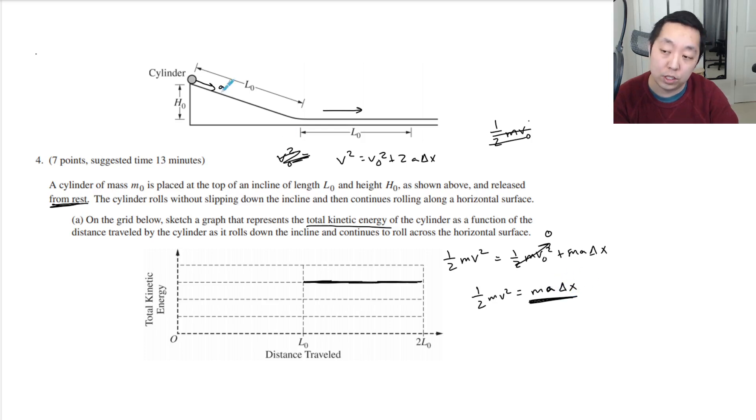And so this is a linear relationship with its displacement. Okay, the acceleration is constant on the inclined plane, and the mass is constant. And so delta x, as it goes up linearly, so then it's just going to look like a straight line. Okay.